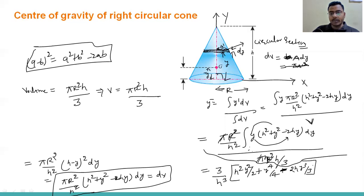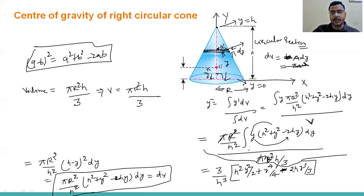For the limits: when the segment is at the base, y equals 0; when the segment is at the apex, y equals h. So lower limit is 0 and upper limit is h.